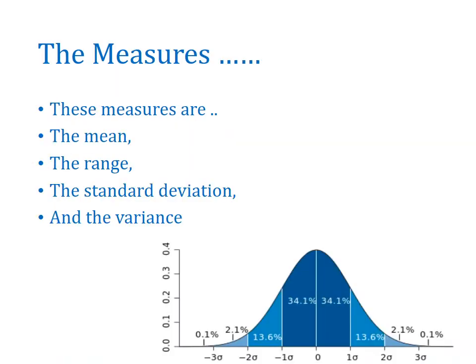The measures indicate the result regarding center of tendency and show the dispersion of your data. These measures are referred to as mean, range, standard deviation, and variance. We also call these measures descriptive statistics, and these measures basically provide the information about feel for data.